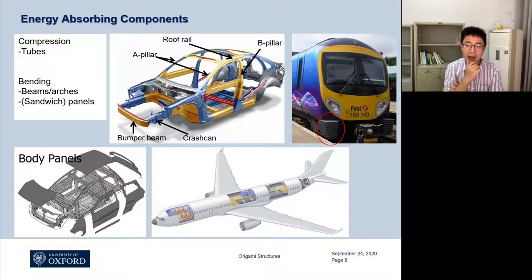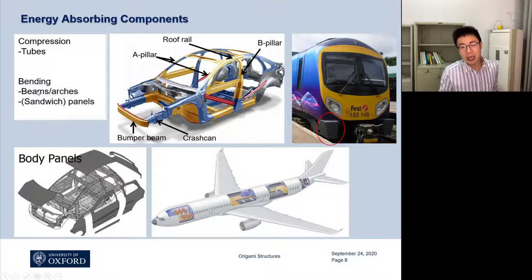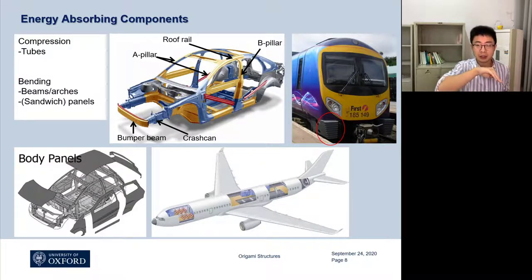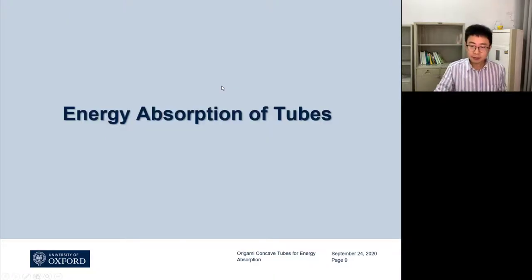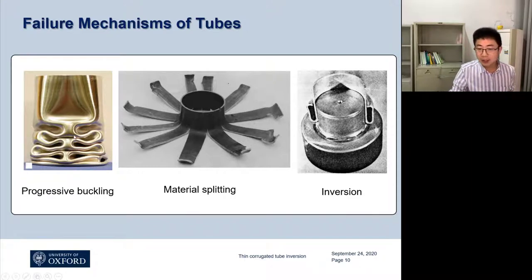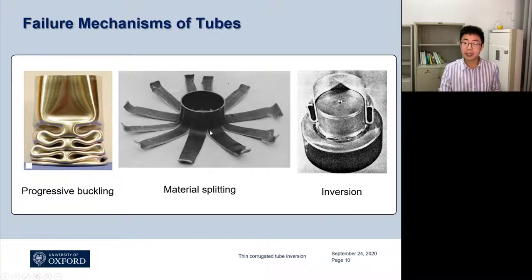That's our target. What are we using to achieve it? These component structures — some are in compression, some in bending: tubes and crash cans in compression, bending beams, panels. My work is to design those components and think about how we can improve them to achieve that type of reaction relationship — goes up and then flat. There are three types of mechanisms for tubes to absorb energy: progressive buckling, material splitting, and inversion.